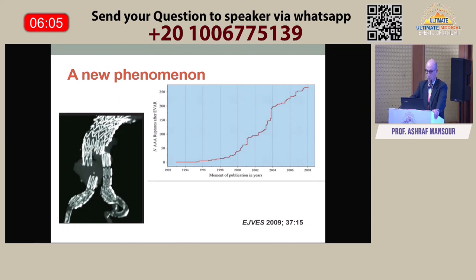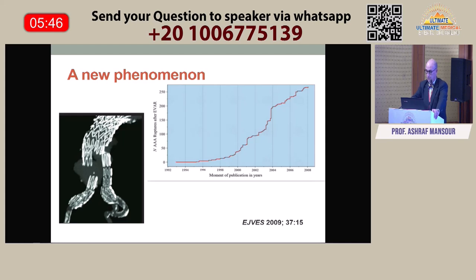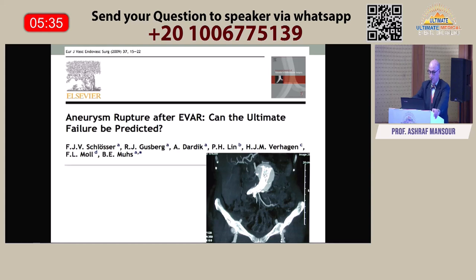This is a graph from the European Journal of Surgery. It shows that in the beginning, in 1994 and 1995, there were almost zero ruptures from EVAR. But as more and more surgeons perform EVAR, the number of ruptures is increasing in the literature. And in the United States, over 80% of patients end up with an endovascular graft.